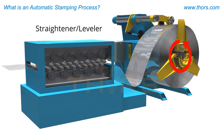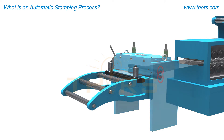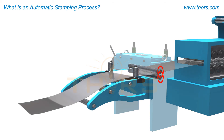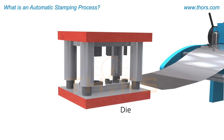A straightener flattens the material prior to it entering into the feeder. A feeder advances the strip of material into the stamping die. This example shows a servo-type feeder. The rolls of the servo feeder, which grip the material with pressure, rotate to advance the material into the die in predetermined increments.